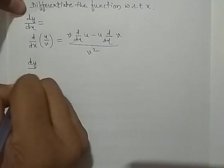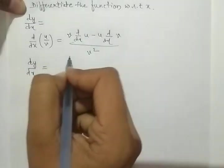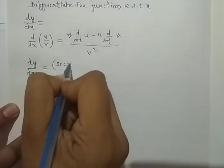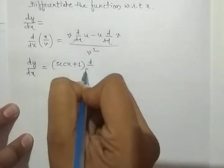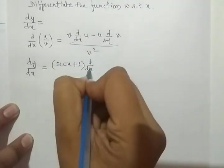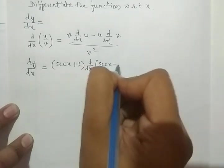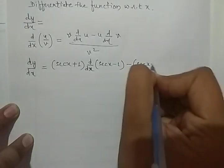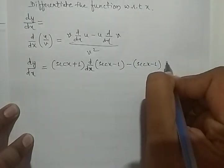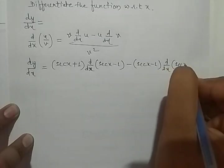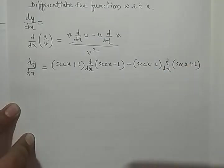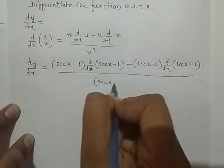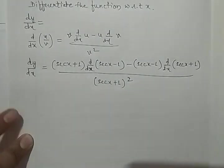So dy by dx is equal to (sec x + 1) times d by dx of (sec x - 1), minus (sec x - 1) times d by dx of (sec x + 1), all upon (sec x + 1) whole square.